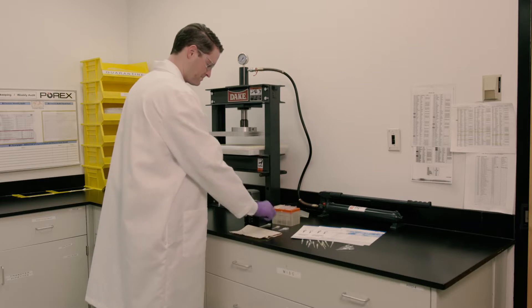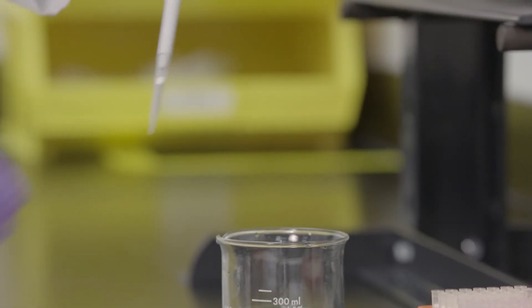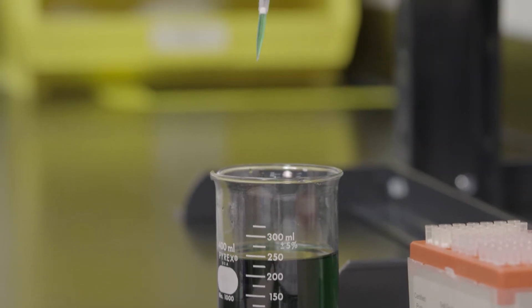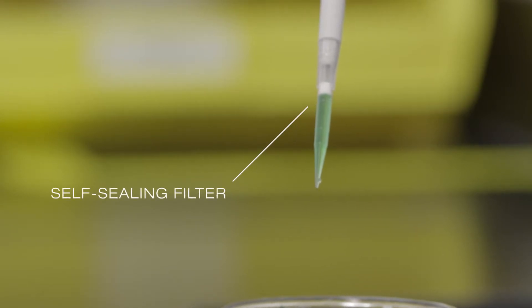Filter B is a self-sealing filter pipette tip. Watch again as we aspirate 300 UL. The green sample does not go through the filter. This is because the filter material is designed specifically with material additives that allow the filter pores to swell to create blockage of fluids in the sample.